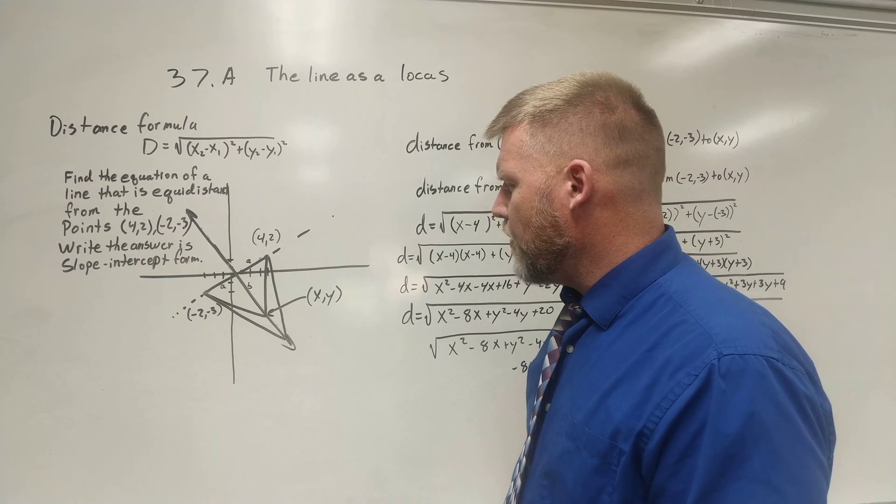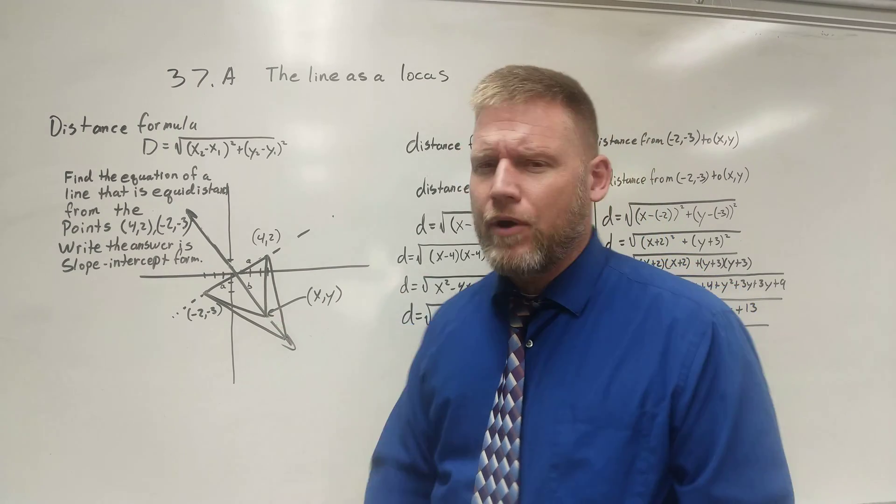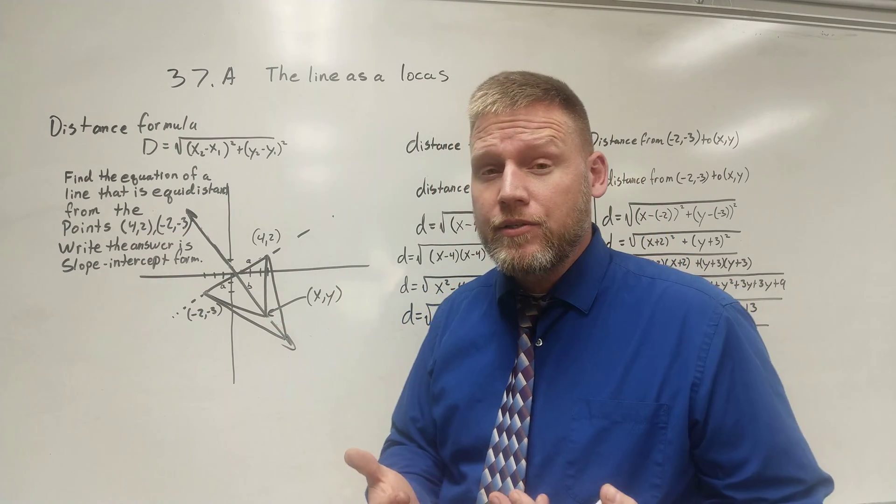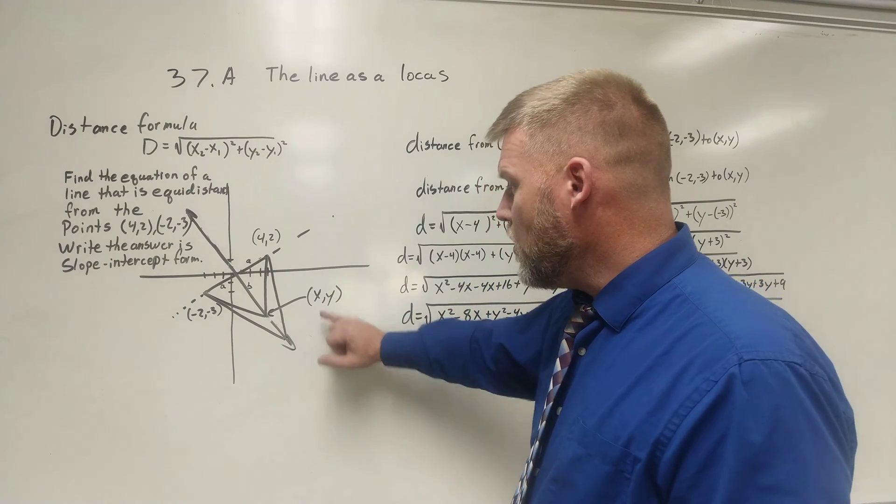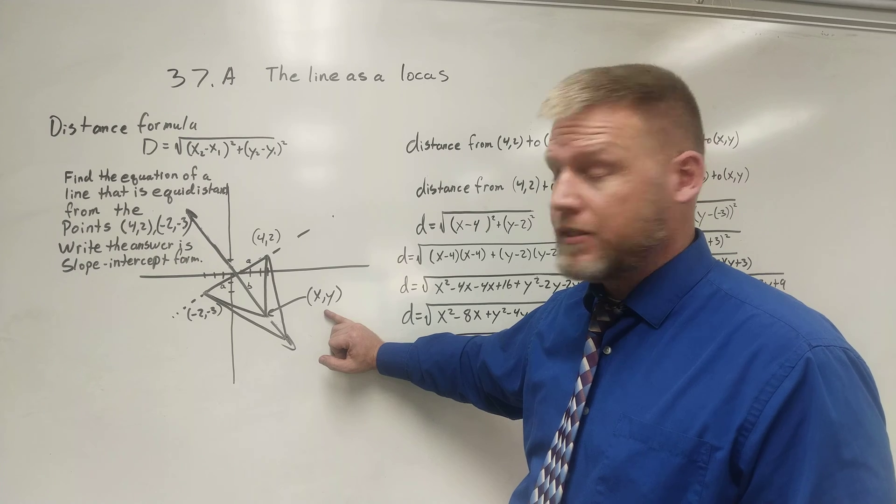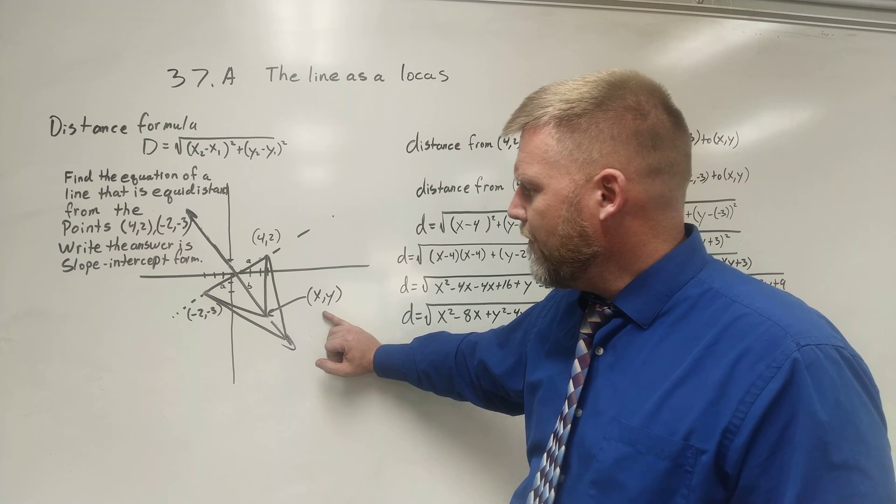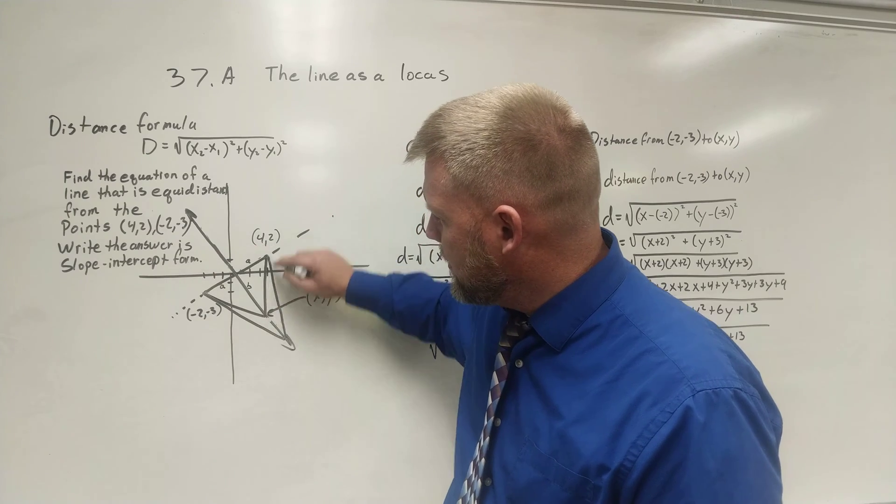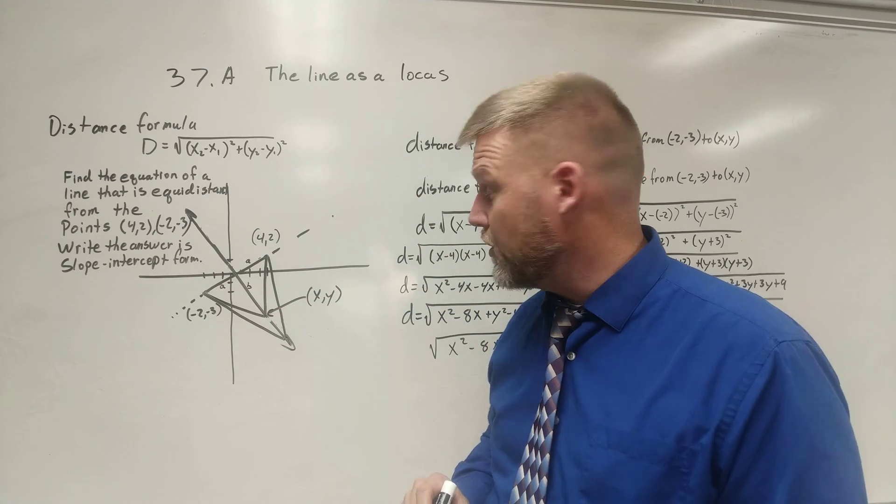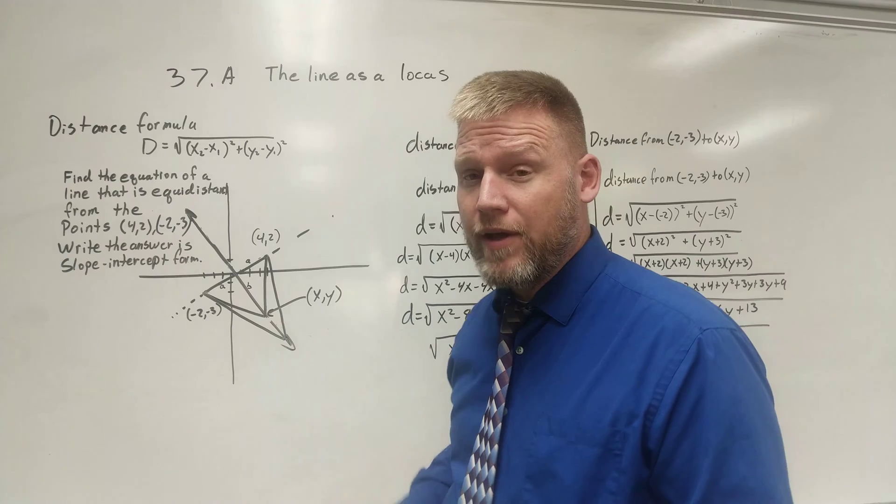Rather than do that, we're just going to say, let's pick that point right there. I don't know what it is, but it really becomes irrelevant what that point is in just a moment. So we're going to call that point x comma y. I don't know what x is. I don't know what y is. But if I could find out what the distance of this line is and the distance of this line, I would have an equation that would tell me how far away they were.